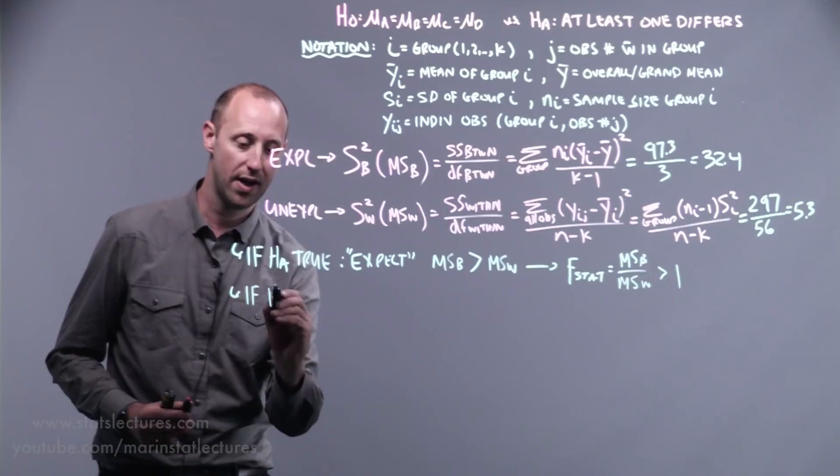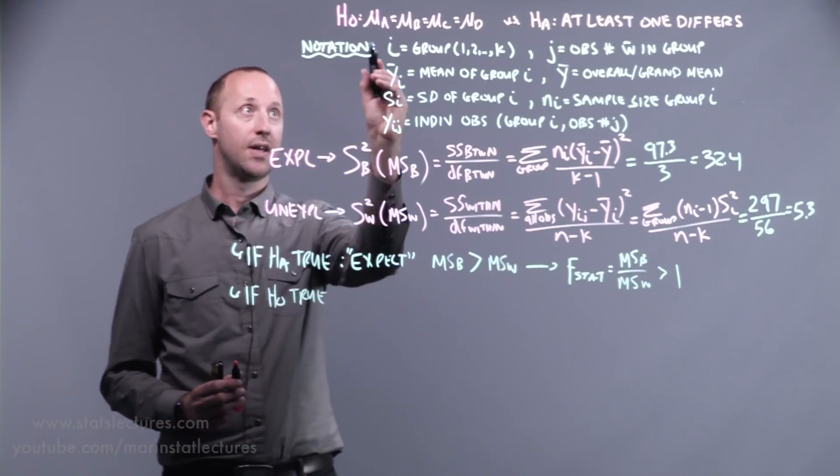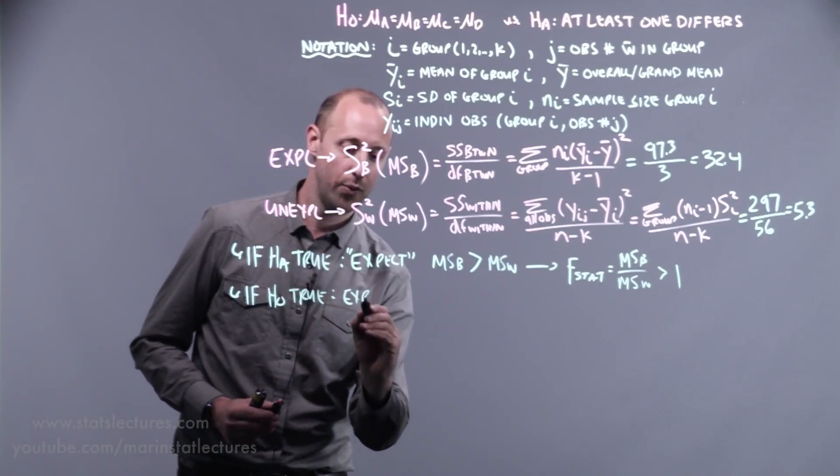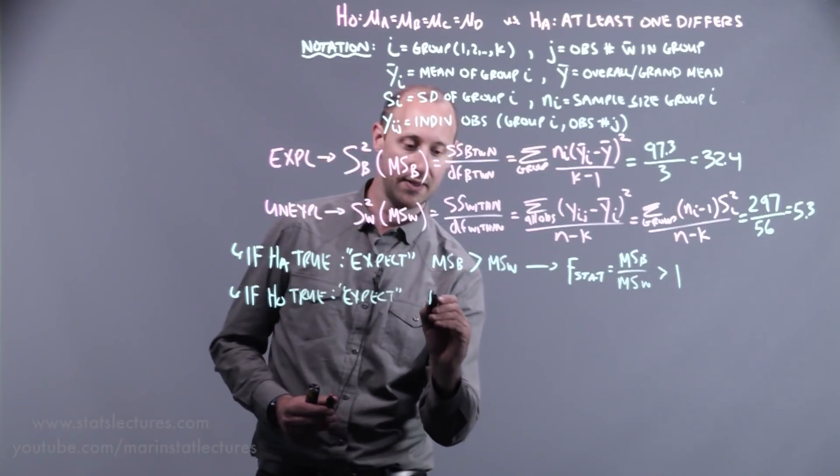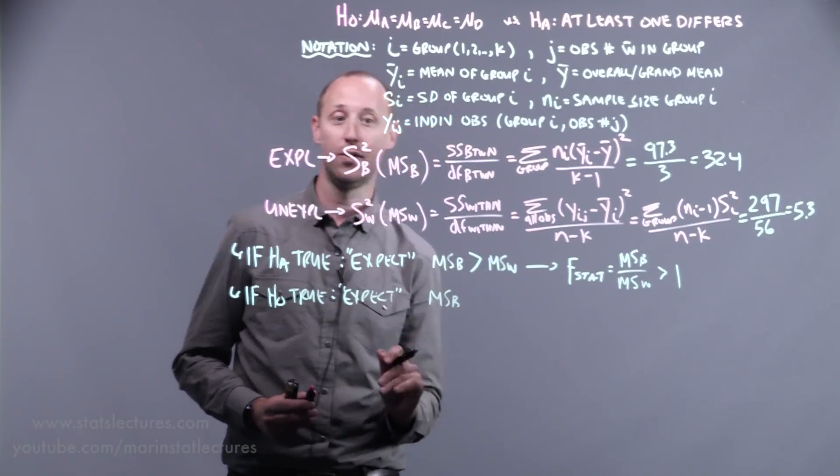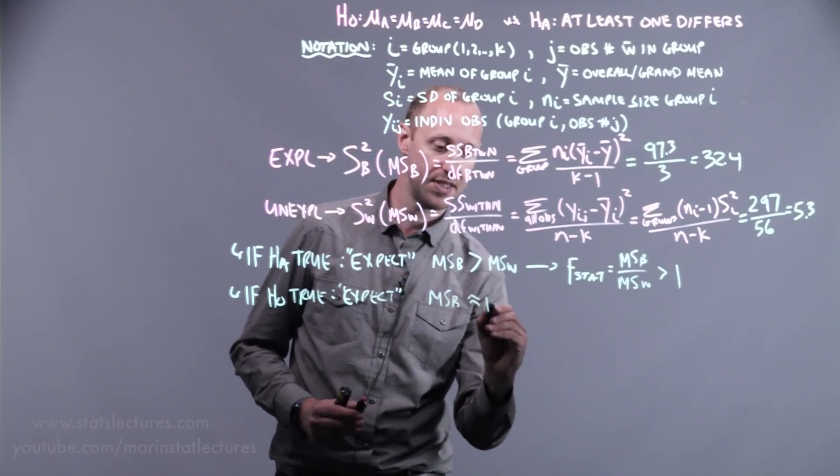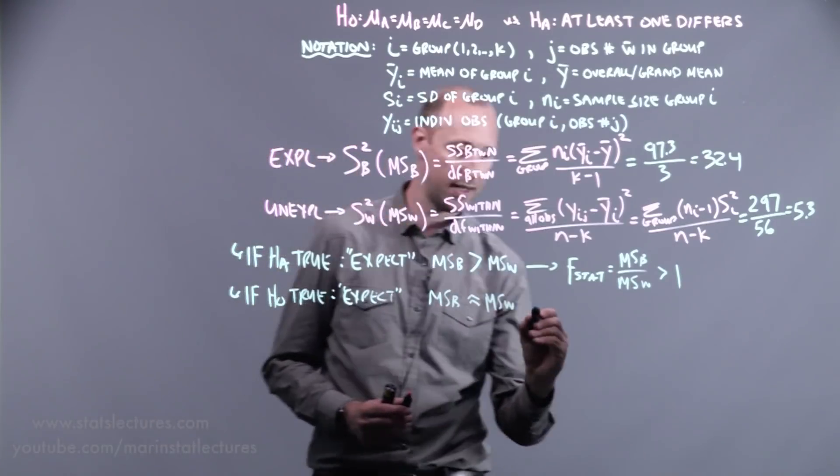If, on the other hand, our null hypothesis is true, if all the means are equal at the population level, what would we expect to see? We'd expect the mean squares between, the variability that's explained by diet, to be roughly the same as the mean square within or the variability that's not explained by diet.